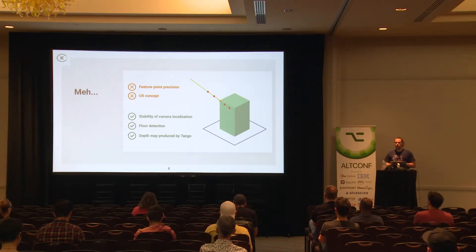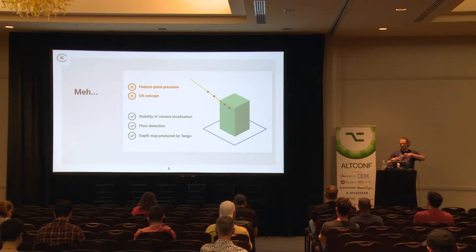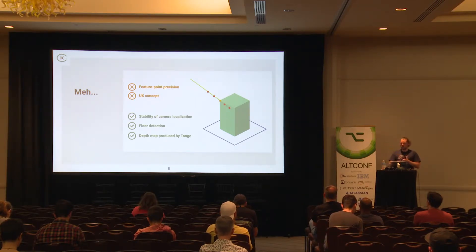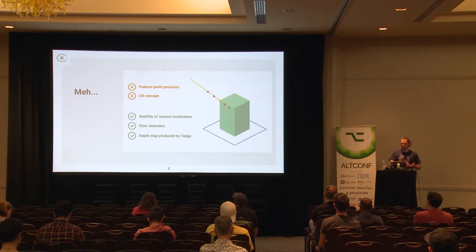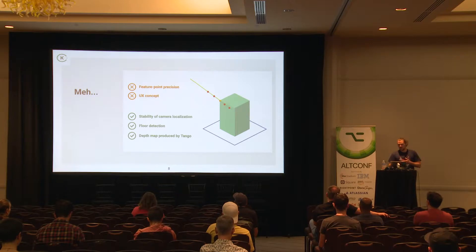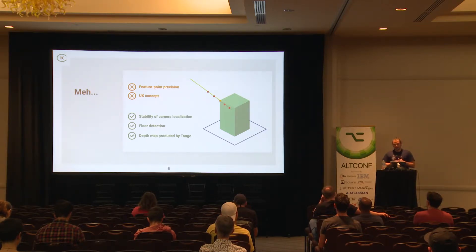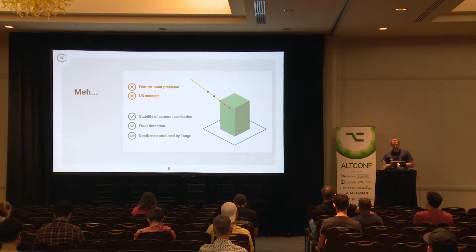On ARKit, the main issue was that feature point extraction wasn't performing as well as we needed. There were a lot of outliers, mainly along the ray from the camera to the object. The object from the camera's point of view looked like a pointy hedgehog — lots of outliers outside and also inside the object — which made it hard to measure because we didn't know which points were inliers and which were outliers. But it was a good start. The stability of camera localization on both Tango and ARKit was good, and the floor detection worked perfectly. We also appreciated the depth map produced by Tango phones, which allowed physical objects to occlude virtual ones for a realistic look. But we weren't happy, and we put this project aside.